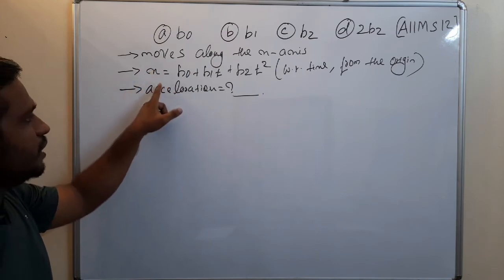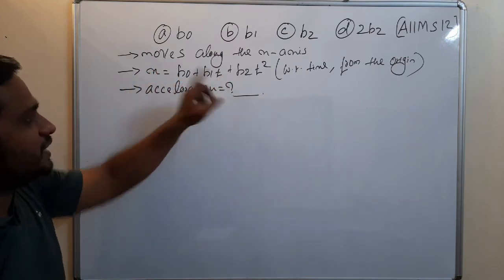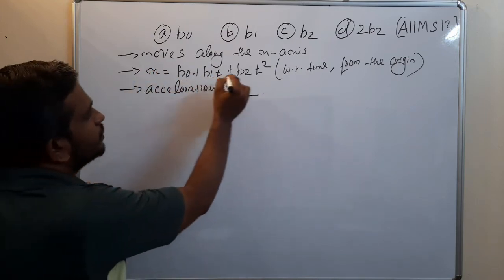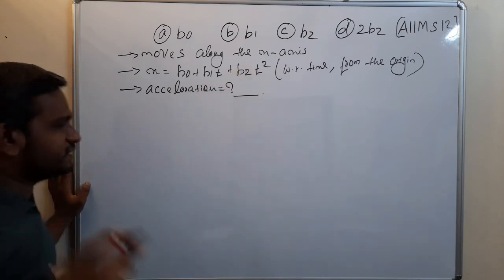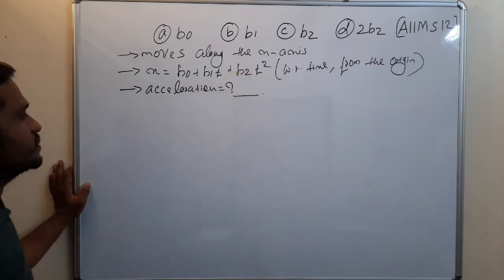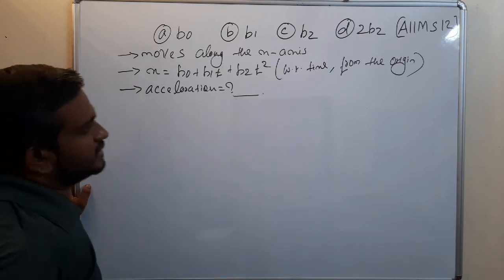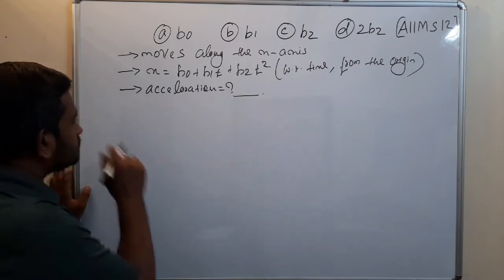The position of the object depends on time, so definitely b0, b1, and b2 are constants. We have to find the acceleration.